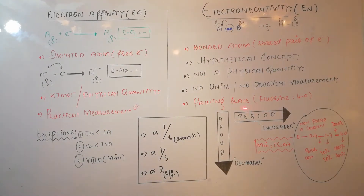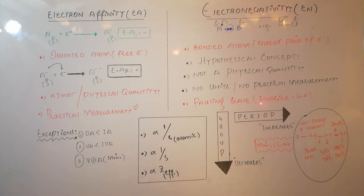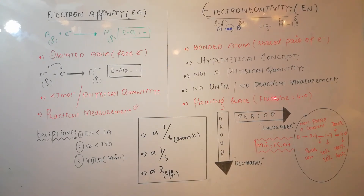The maximum electronegativity belongs to fluorine. Keep in mind that the minimum electronegativity belongs to cesium, which is 0.7.